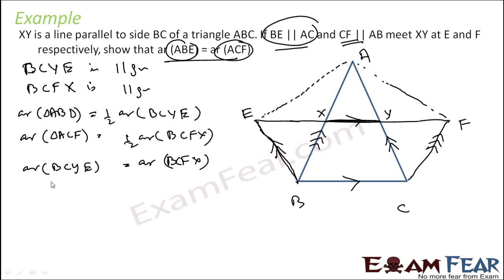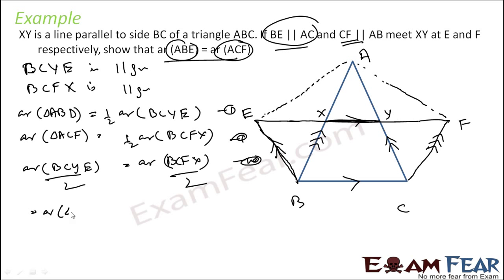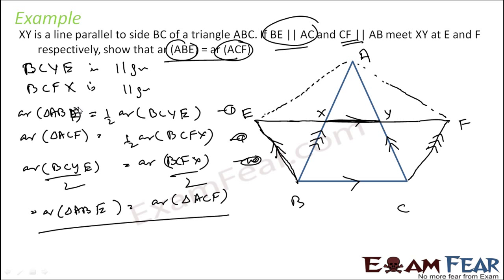Why? They are the same base VC. So divide by two will also be equal. If we divide by two we get this equal. Now using equations one, two and three, we can say that area of triangle ABE is equal to area of triangle ACF. Because area of triangle ABE is half of VCYE, area of ACF is half of VCFX, and half of these are equal. Making this parallel line actually helps to find the area.